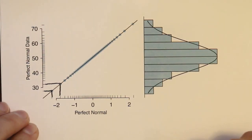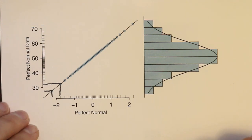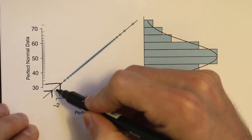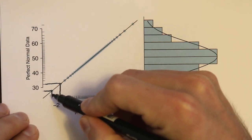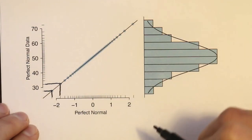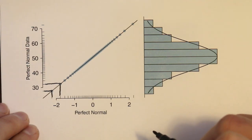No data set that we actually observe will be perfectly normally distributed. So what we'll observe is that observations tend to follow something close to this line if the data set is actually normally distributed, but it won't be perfectly along that line. We're going to look at several different examples to better understand that.